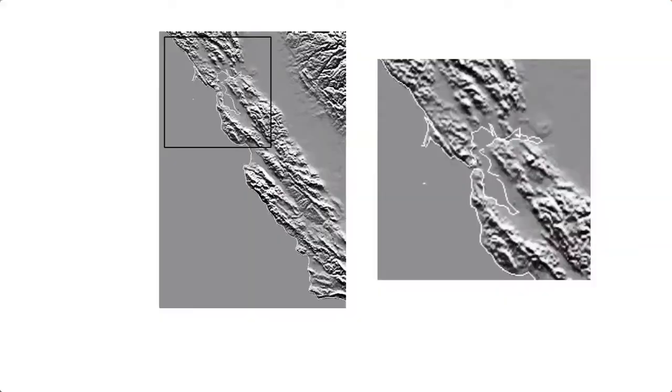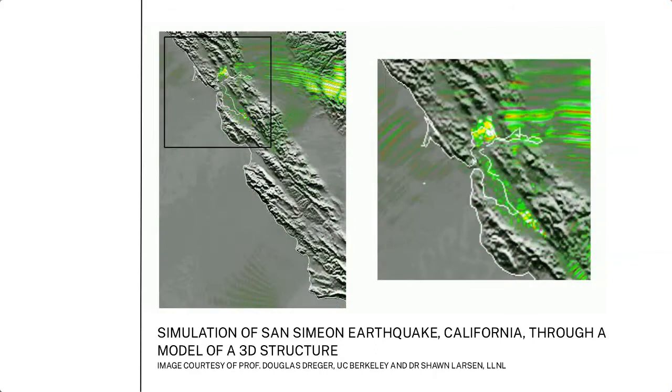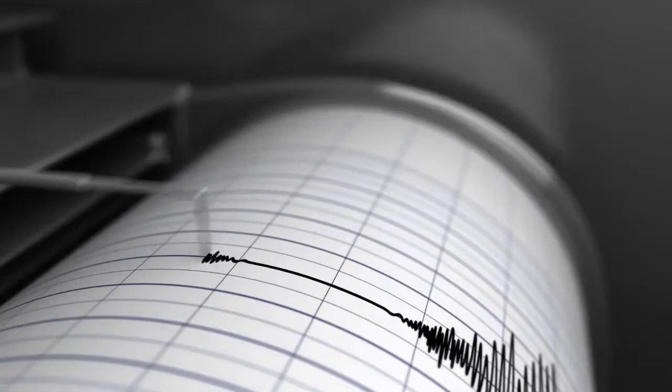Seismic waves are generated by earthquakes. For example, two tectonic blocks suddenly slip. There is energy that's generated by that earthquake, and it moves through the earth in the form of seismic waves. We record the ground motion by sensitive instruments called seismographs.